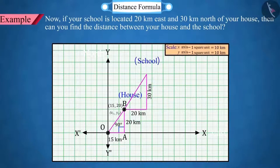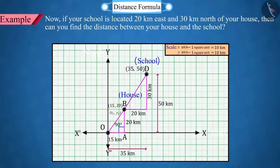Similarly, school has the coordinates of the point D will be obtained as 35 from the x-axis and 50 from the y-axis. Then, represent the coordinates of the point D, that is 35 as x2 and 50 as y2.